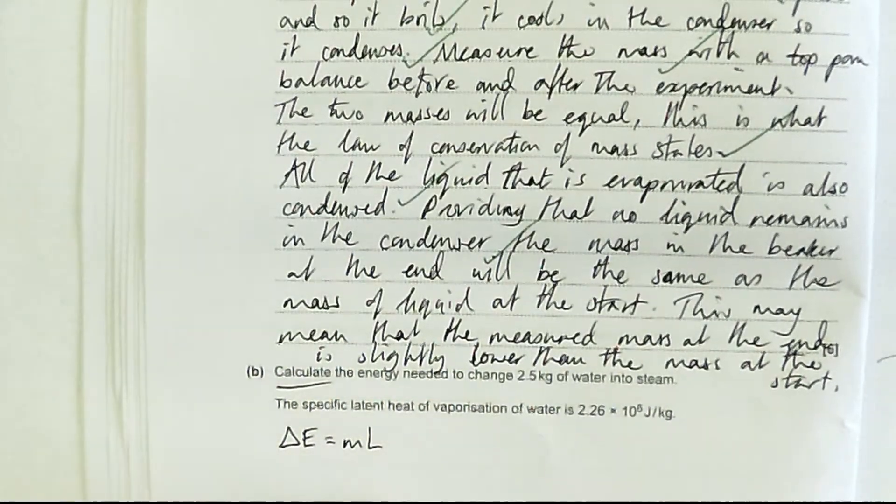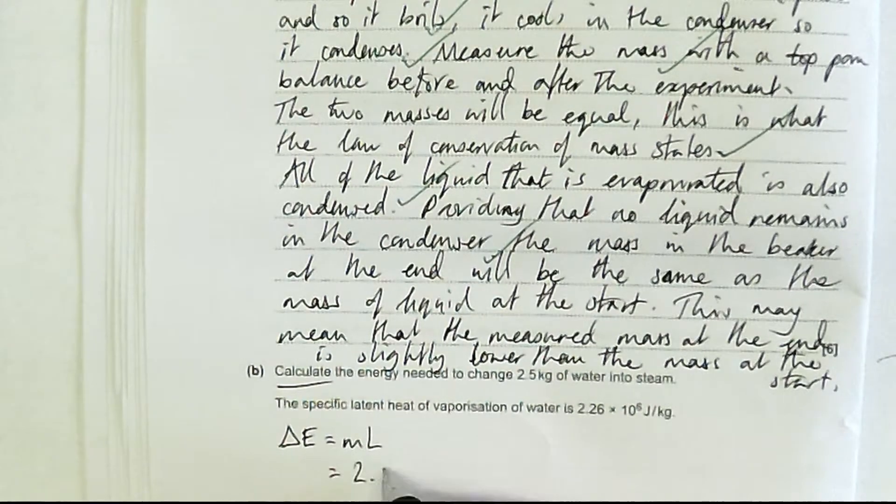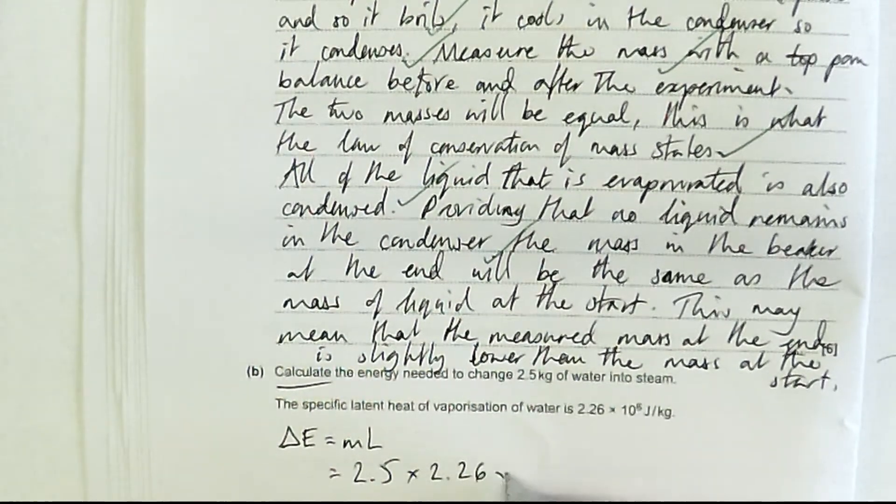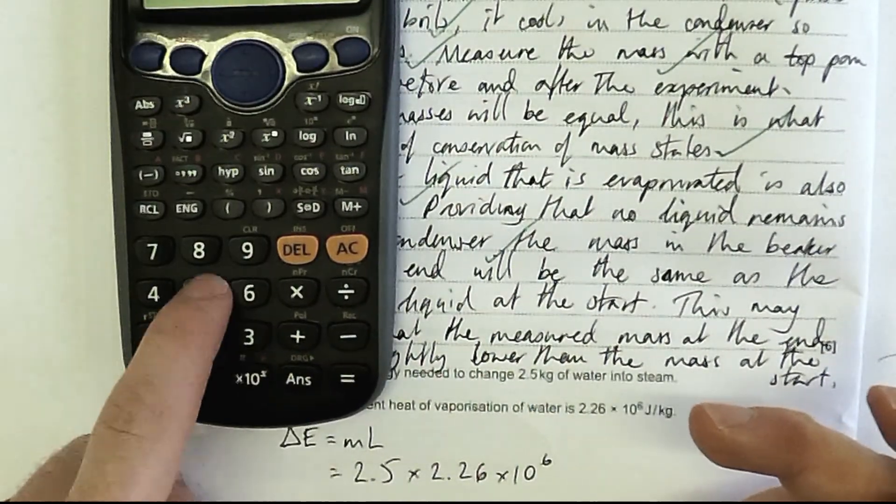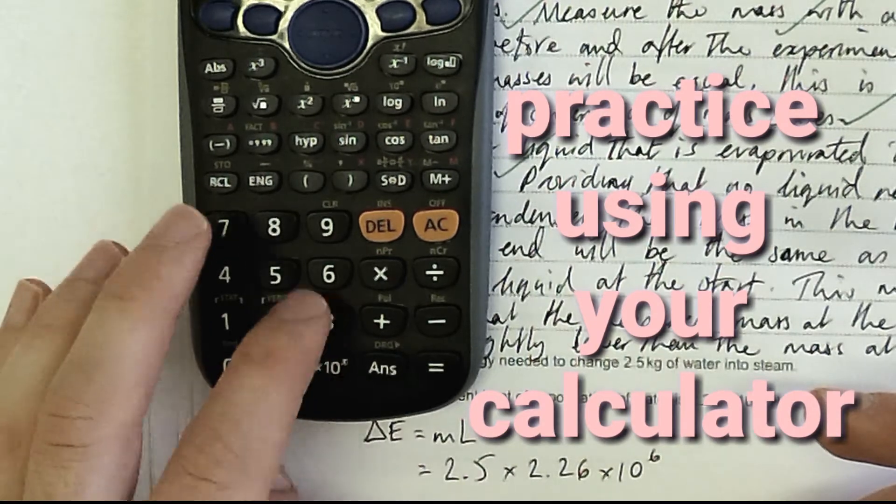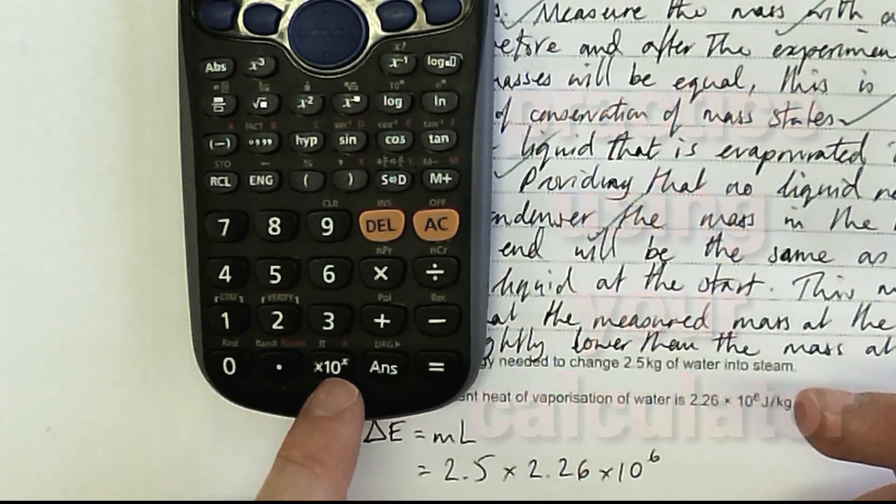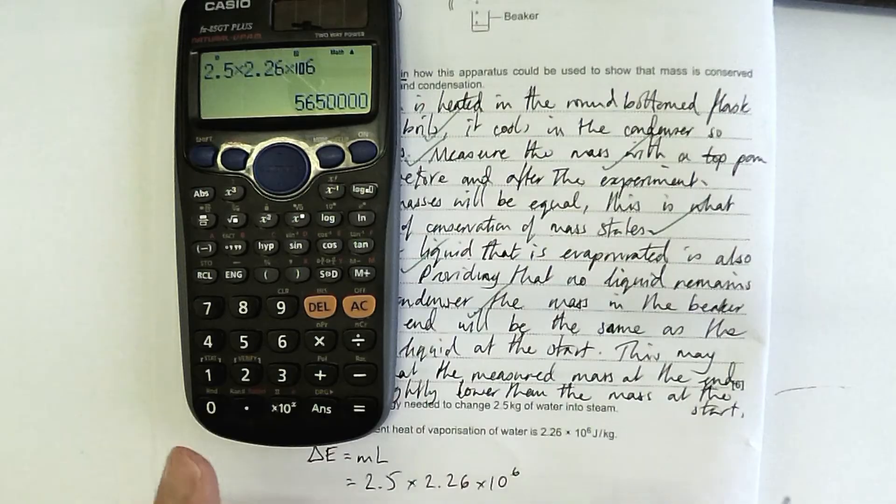Are they sensible units? I've got kilograms and joules, I want an answer in joules. That's two marks, so there isn't much unit conversion. 2.5 times 2.26 times 10 to the 6. Use a calculator for sure this time. Make sure you use the times 10 to the button. Very useful because they treat that as just one number.